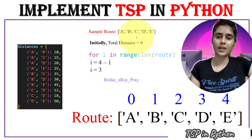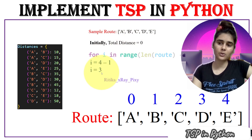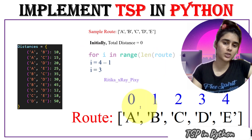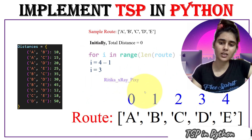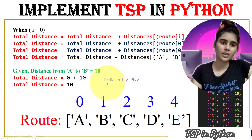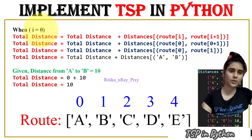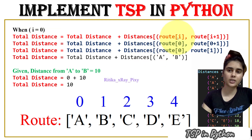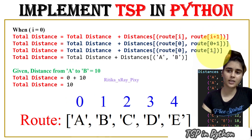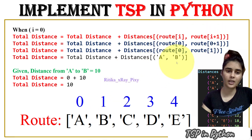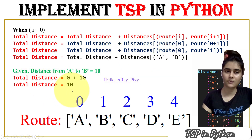In the end we will return the total distance. Let's see how it works. We have a total of five cities, initially distance is 0, and the index for five cities is 0, 1, 2, 3, 4. Initially the value for i is 0, so route[0] is A and route[1] is B. The distance between A to B is 10, so total distance is now 10.